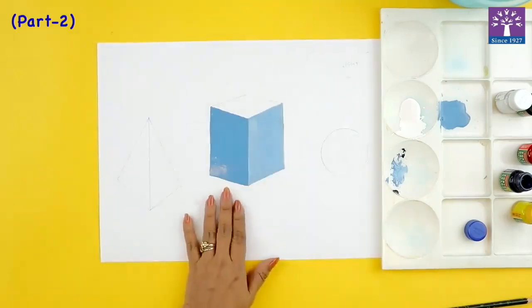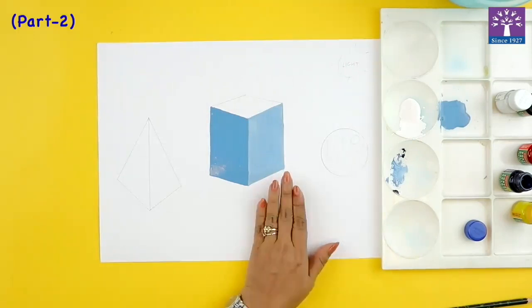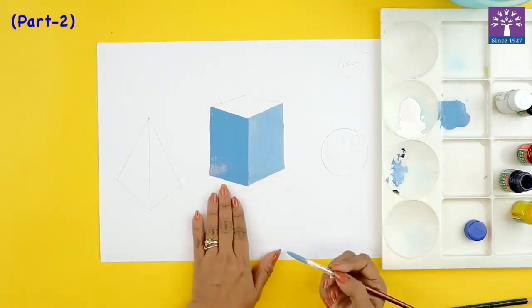Now why this side is darker than this first side? Because here less light is falling on this part.